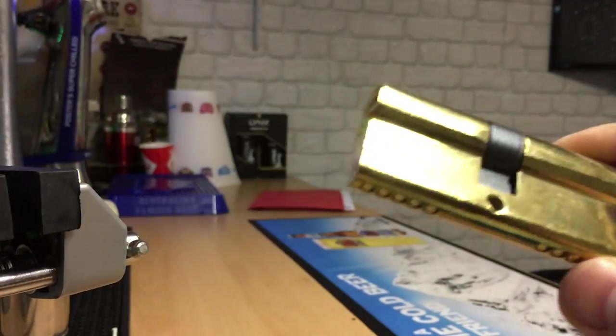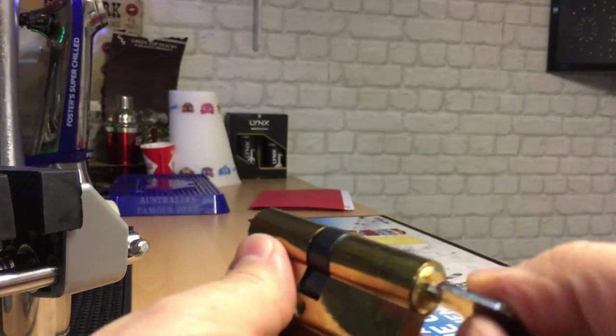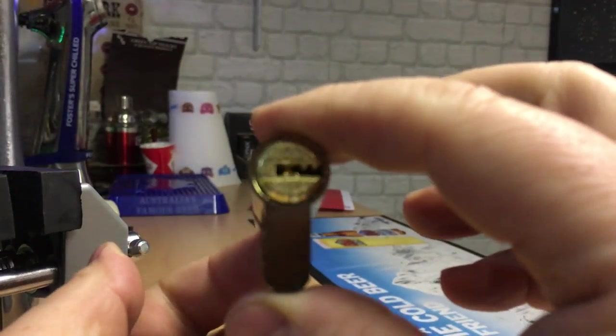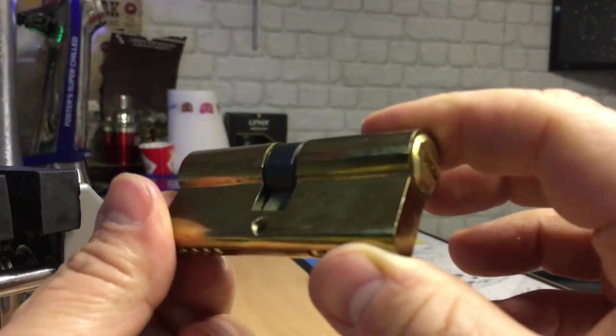Whereas with this World Ball lock, when you take the key out, there's nothing sticking out. It's totally flat.